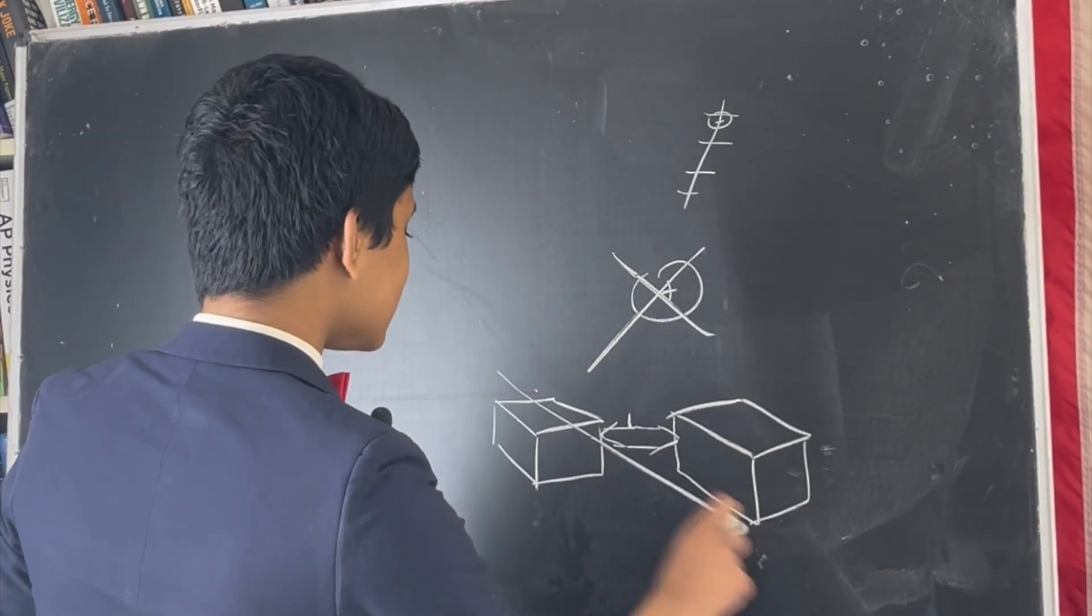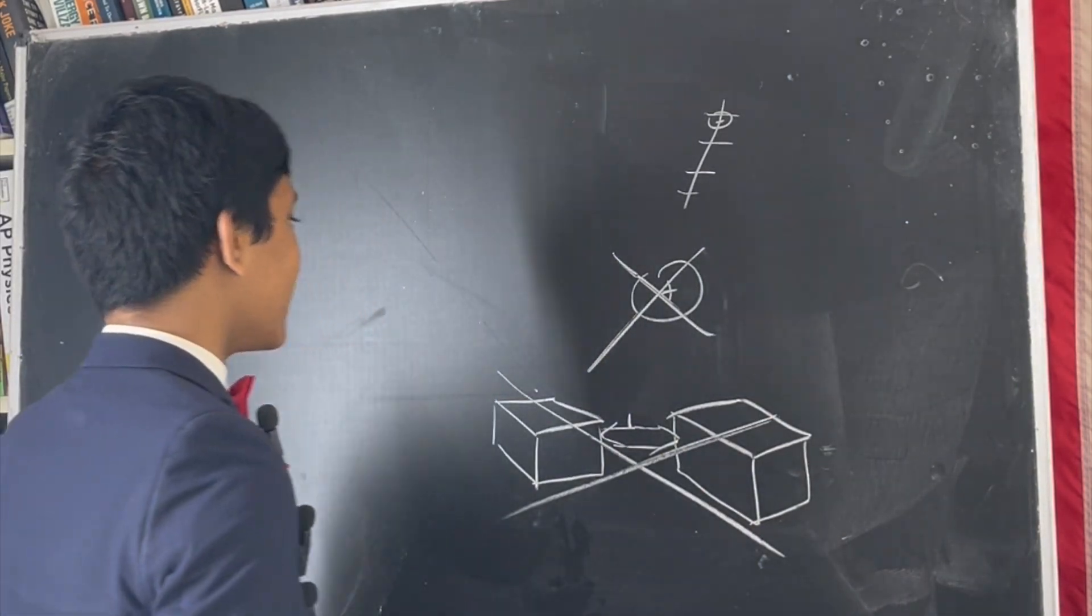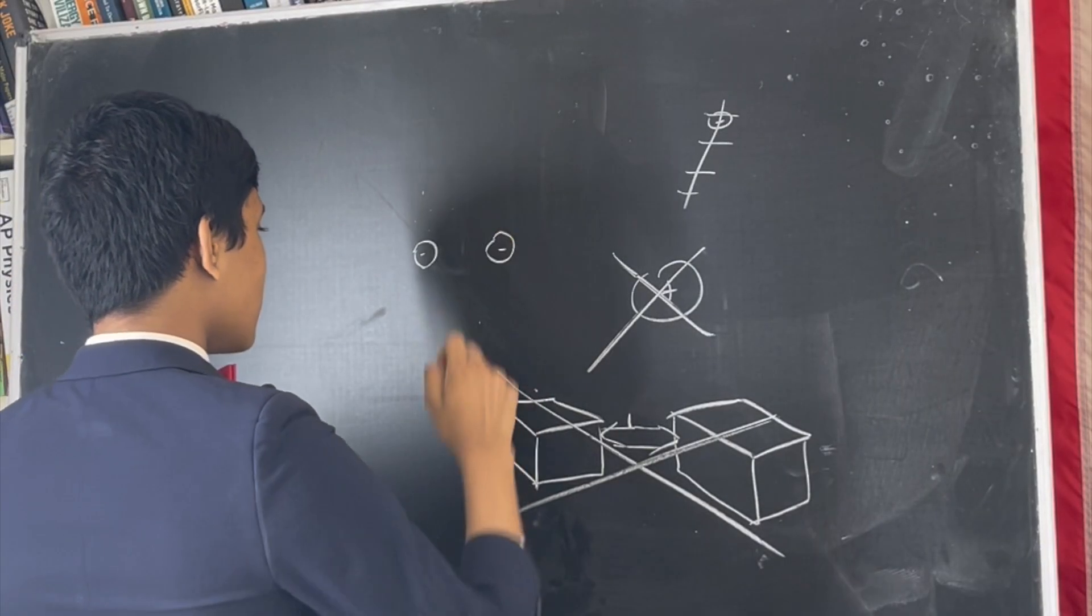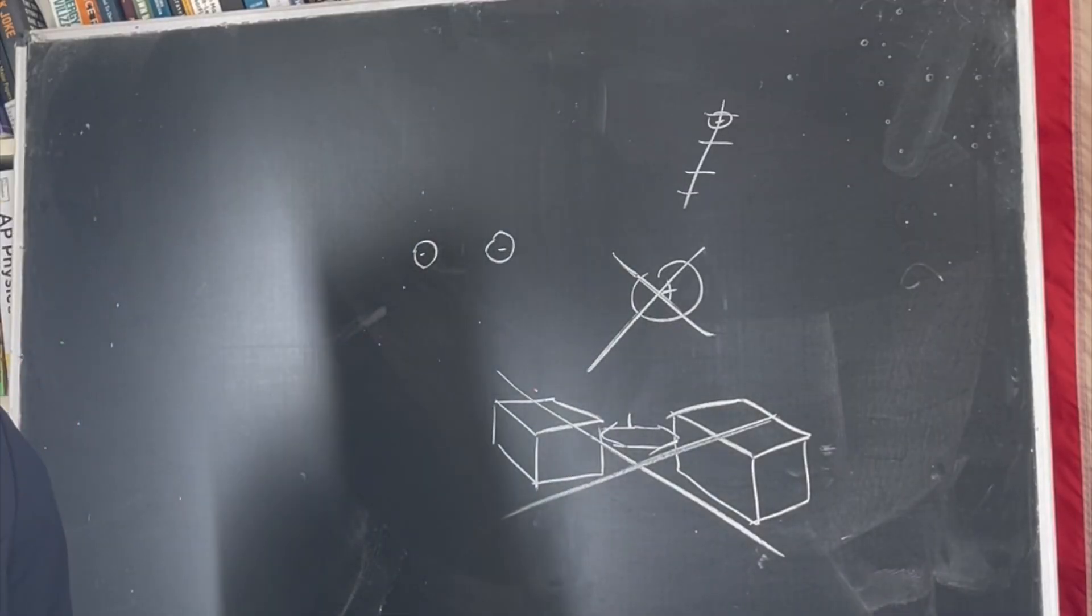But this is not true in quantum mechanics. In quantum mechanics, electrons are fundamentally indistinguishable.